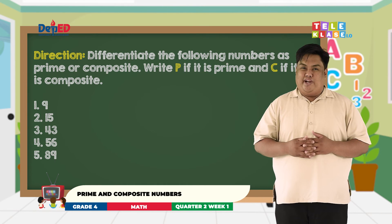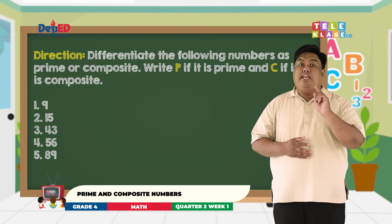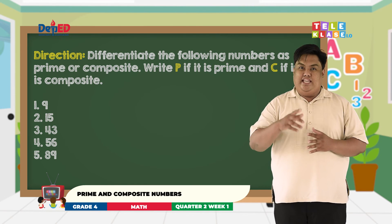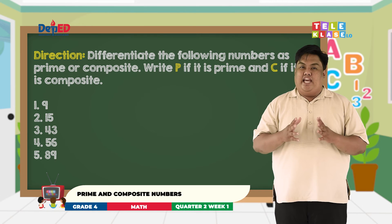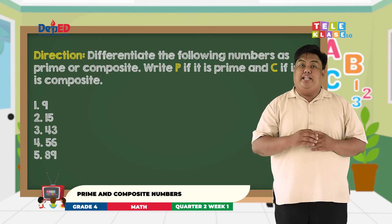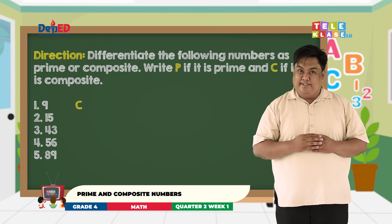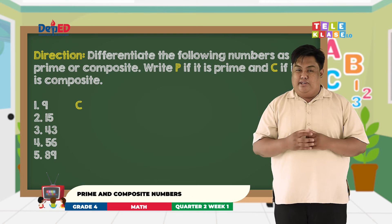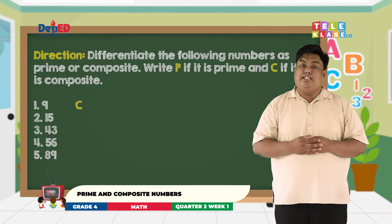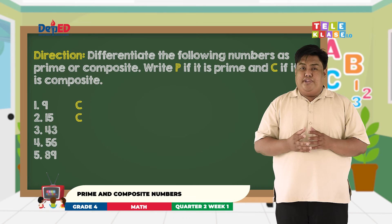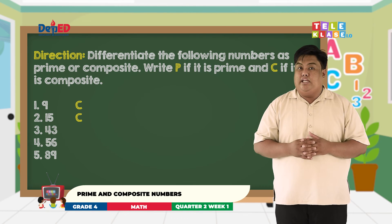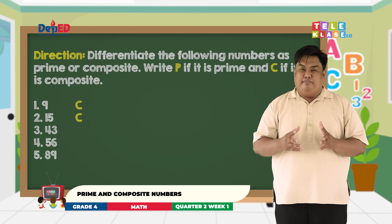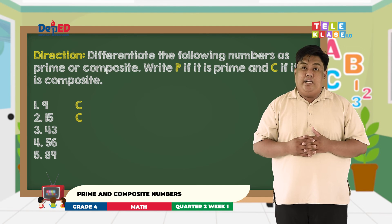Okay guys, time's up. Let's see whether your answers are all correct. I want you all to be honest. So, what is your answer in number 1? Yes, correct. 9 is a composite number. Therefore, your answer should be letter C. For number 2, 15 is a composite number. So your answer should be letter C. Now for number 3, the number is 43. Is it prime or composite? Very good. It's prime. So your answer should be letter P.